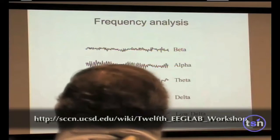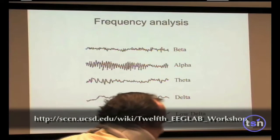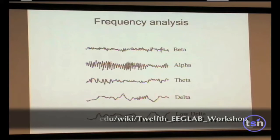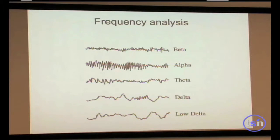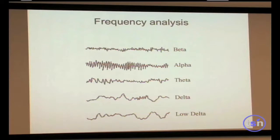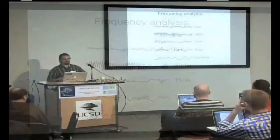These are idealized sinusoids, but real brainwaves look different. Here is low Delta, here is Delta, and you can see a bit of Theta — a little bit faster, about five oscillations per second. Alpha would be higher amplitude at about 10 oscillations per second, and Beta would look something like this. Gamma you usually cannot see in the raw data; you have to filter the data first.